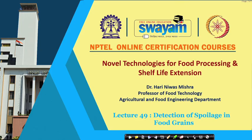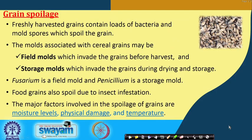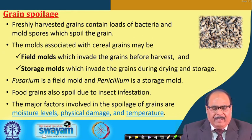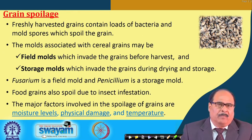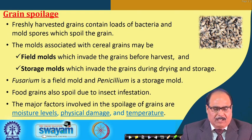In this lecture we will study detection of spoilage in food grains. The grains when harvested from the field are harvested under different conditions. Depending upon agronomical practices and environmental conditions at the time of harvesting, the grain may contain less or more moisture. The grain may also contain loads of microorganisms such as bacteria, mold, and their spores, and these all spoil the grain.